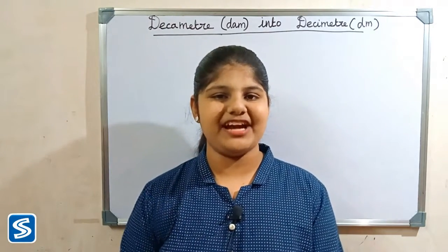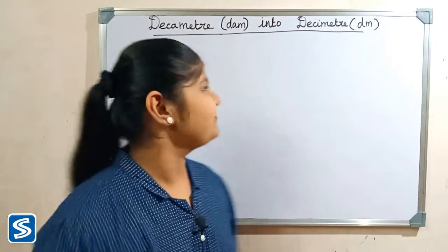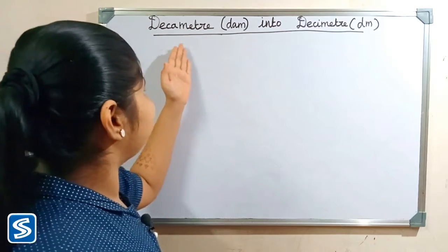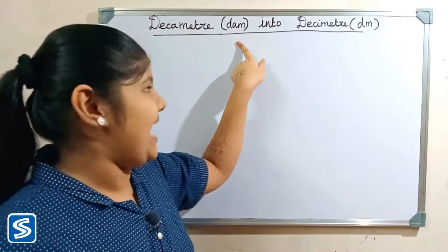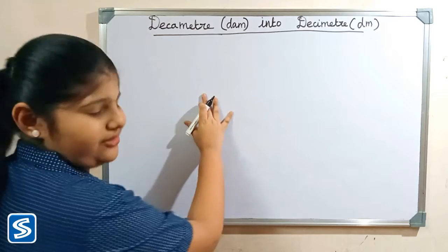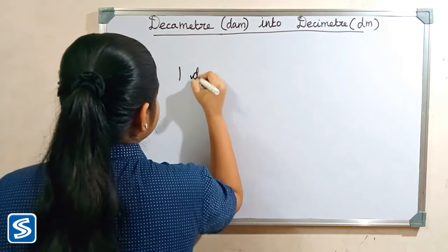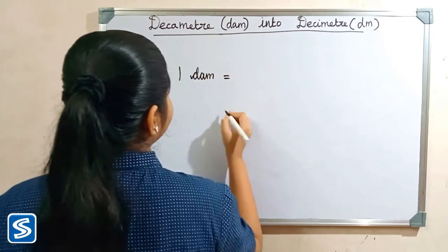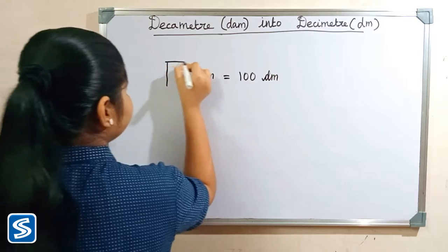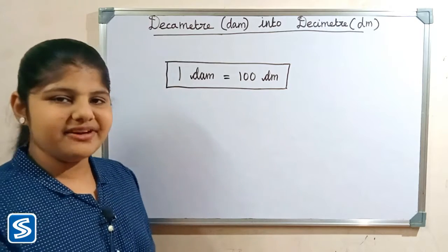Hi friends, welcome to this channel. In this video I'm going to teach how to convert decameter into decimeter. Decameter and decimeter are units of length. The short form of decameter is 'dam' and the short form of decimeter is 'dm'. The formula for converting decameter into decimeter is: one decameter is equal to 100 decimeters. Now we will take some examples.